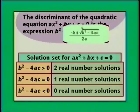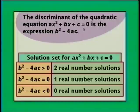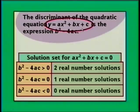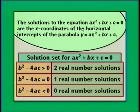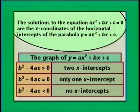The solutions to ax squared plus bx plus c equals 0 are the x-coordinates of the horizontal intercepts of the parabola y equals ax squared plus bx plus c. So the graph of y equals ax squared plus bx plus c has two x-intercepts when the discriminant is positive, only one x-intercept when the discriminant is 0, and no x-intercepts when the discriminant is negative.